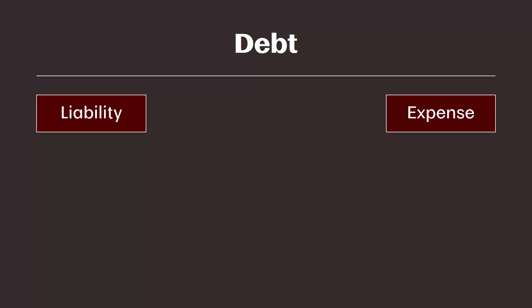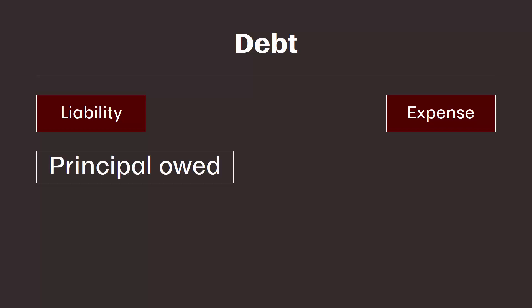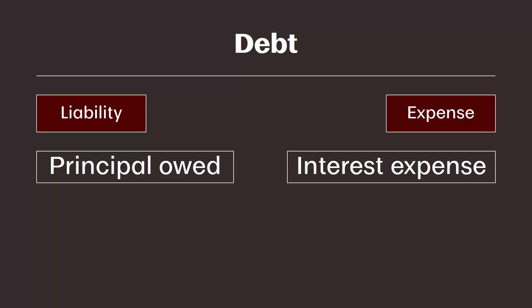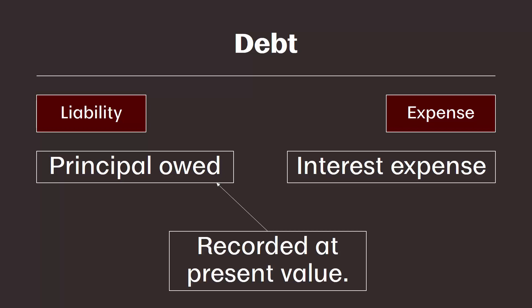The last liability I want to cover in a little more detail is long-term debt. Debt on the balance sheet is reported as the principal balance, or the balance owed. So the liability portion is the principal. Each period, the company will also report interest expense for the amount of interest the company incurred in that period. Interest expense goes on the income statement with all the other expenses, but the balance owed — the principal — is on the balance sheet. It is also important to note that debt is recorded on the balance sheet at present value.